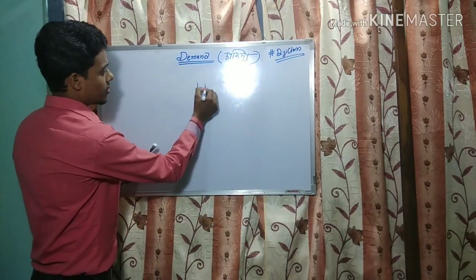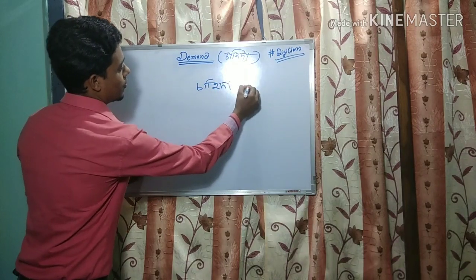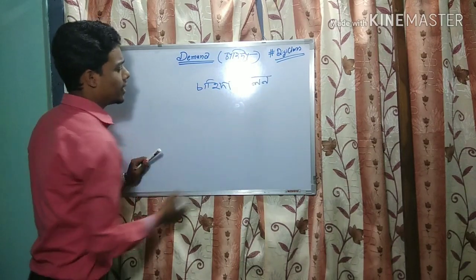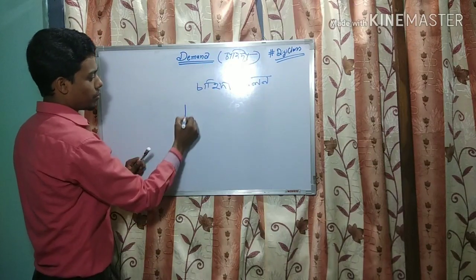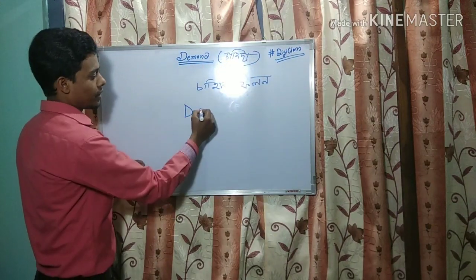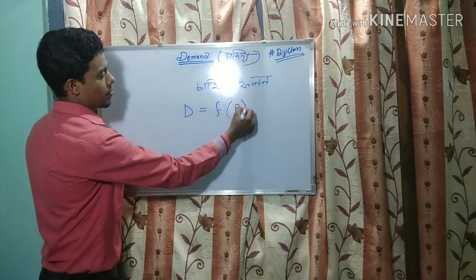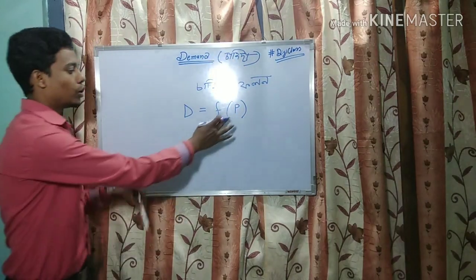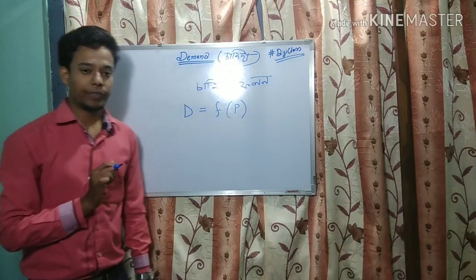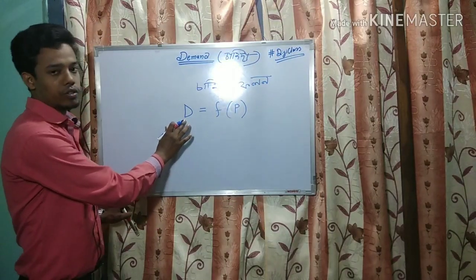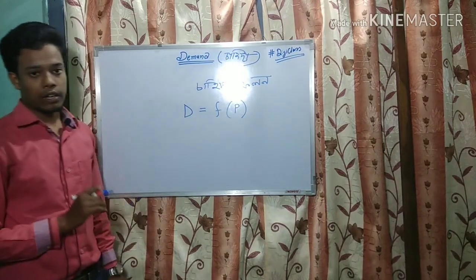সাহিদা ফলন — সাহিদা ফলন ইকে বুজায় সাহিদা, যাক ডিমান বুলিকোয়, দু সিমবল দেরে বুজমা হয়। ইজে ফাংক্সন ওফ পি, যাত পির অর্থ হল প্রাইস, অর্থাত বসিটোর দাম।